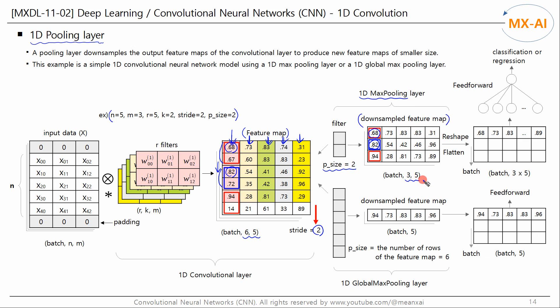This feature map can be fed into another 1D convolutional layer or into a feedforward network. It is reshaped into a two-dimensional structure and fed into a feedforward network for classification or regression. You can also use 1D global max pooling, where the pooling filter size equals the number of rows in the feature map, producing a two-dimensional feature map that can be fed directly into a feedforward network. Instead of 1D max pooling, you can also use a 1D average pooling layer.